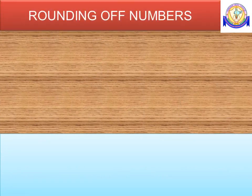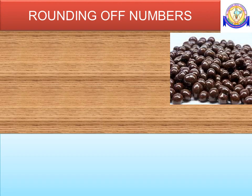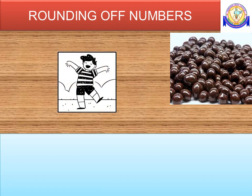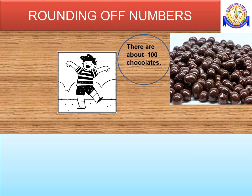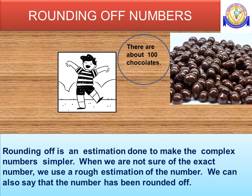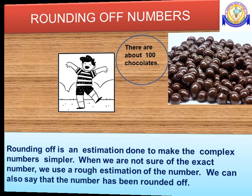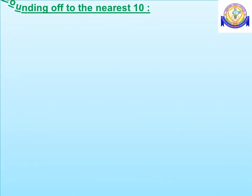The next concept we are going to learn is rounding off numbers. Rounding off is an estimation done to make a complex number simpler. When we are not sure of the exact number, we use a rough estimation of the number. We can also say that the number has been rounded off. Now we will see how to round off a number to its nearest 10.